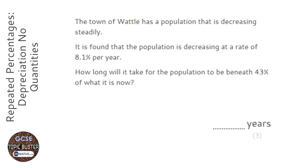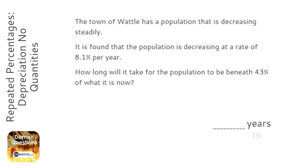This question doesn't have any amounts in it. What you could do is put an amount in — we could pretend there are 100 people in the town and then see how long it takes to get beneath 43 people. That's absolutely fine as a method, but I'm going to be doing this with multipliers.